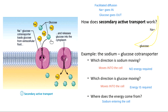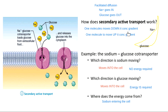The energy of secondary active transport: one molecule moves down its concentration gradient — from high to low, no energy required. That allows one molecule to move up its concentration gradient — from low to high. We do that piggybacking, stealing the energy to move my second thing up its concentration gradient.